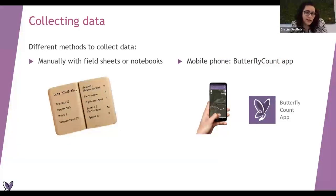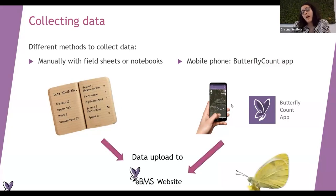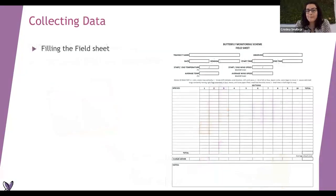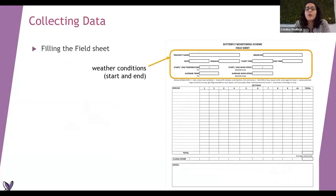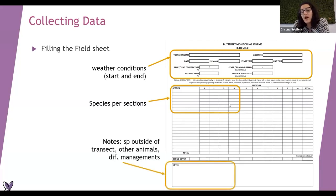Just on collecting the data - I'm going to talk shortly about this, but we can do another seminar explaining the EBMS tools and how to use them. Basically, you can record on your notebook manually in the field, or use the Butterfly Count app directly in the field that we created for this purpose. At the end, we would like all the data submitted to the EBMS website. This is an example of one field sheet - here is the weather condition, the transect name, the day, the temperature, and so on. Then you register the species per section, and if you have any comment about the transect you can include it here.